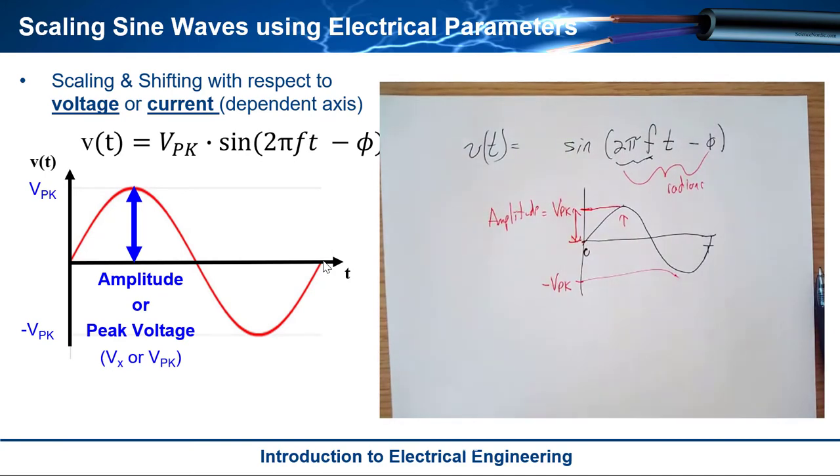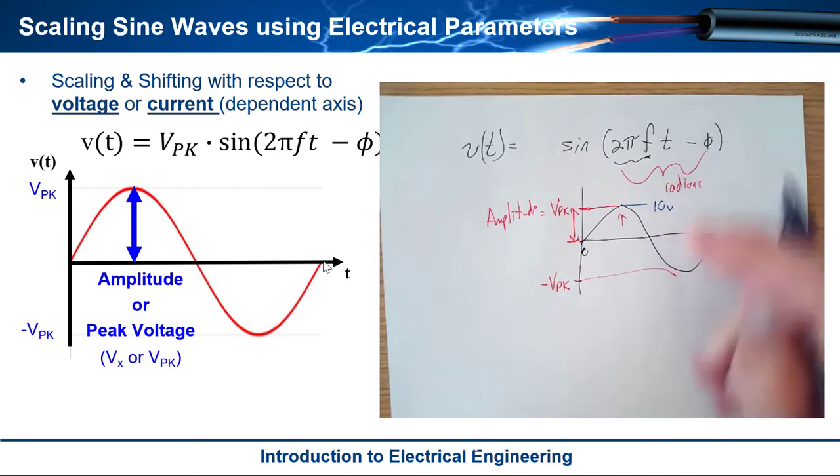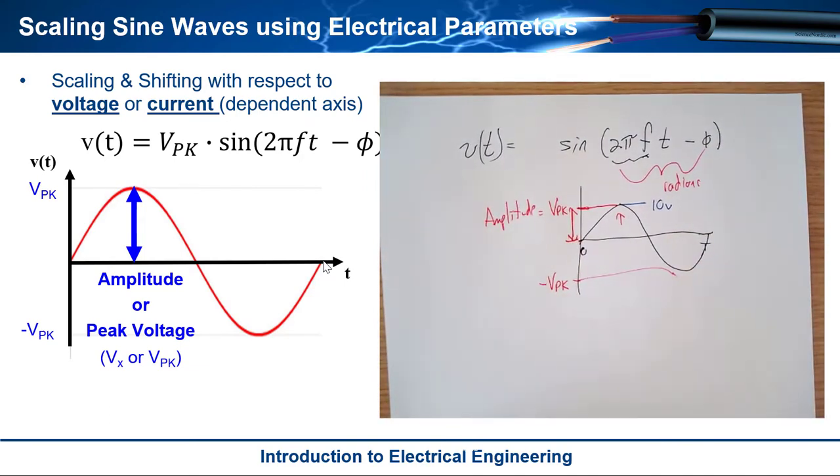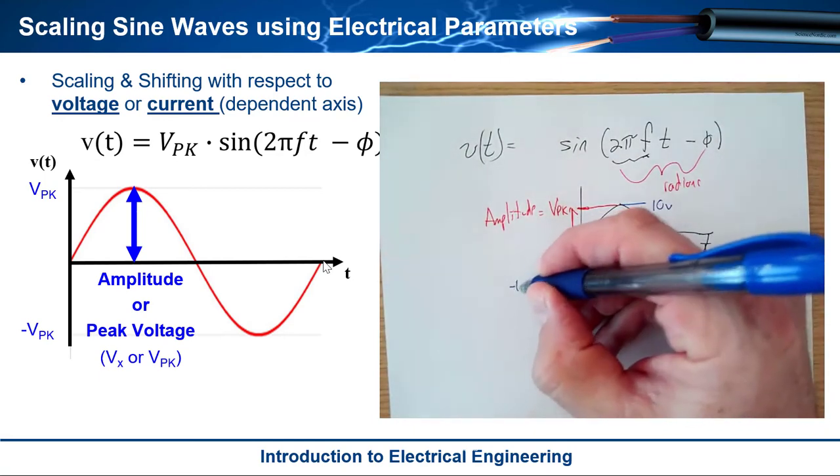So for example if I wanted a sine wave that went to like you know let's say 10 volts I would say that the v_pk is 10 volts or the amplitude is 10 volts even though I know that it swings from 10 volts to negative 10 volts.